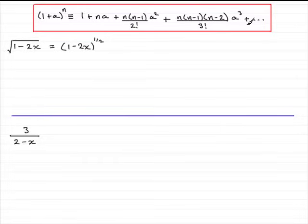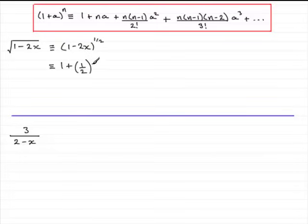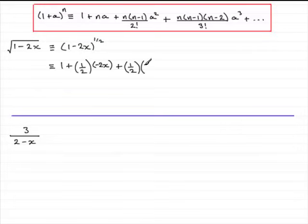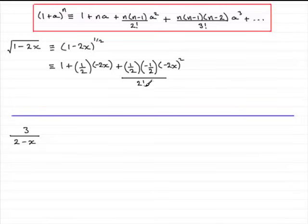Using the formula, this becomes 1 plus n times a, so plus a half times minus 2x. Then we have plus n times n minus 1 over 2 factorial times a squared. So that's plus a half, then n minus 1 gives minus a half, times a squared — that's minus 2x all squared, put in brackets — all divided by 2 factorial, which is 2 times 1.